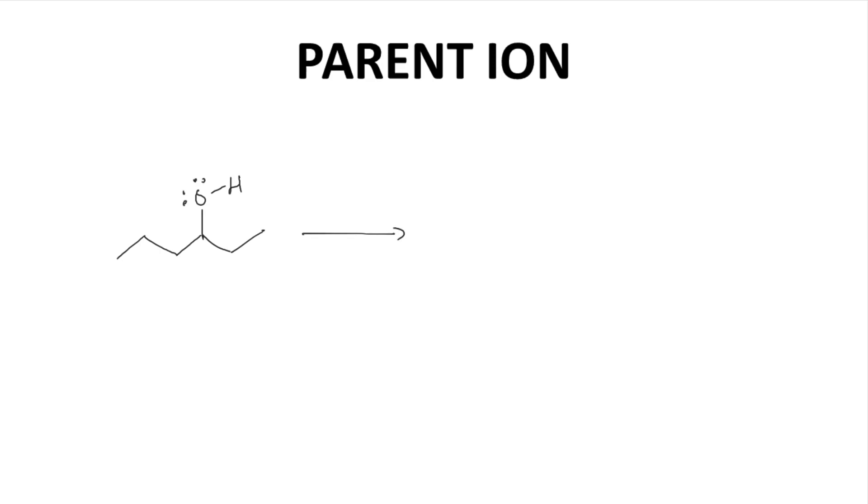During ionization, an electron will be removed from this molecule, and that electron will most likely come from a lone pair. With one electron removed from the lone pair, here is the structure of our parent ion.